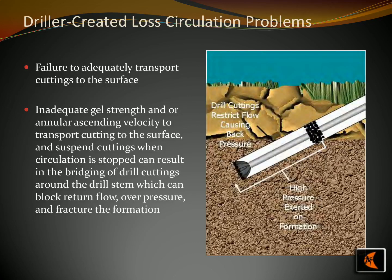The drilling industry confronts the significant challenge of driller-created loss circulation problems. Poor transport of cuttings to the surface may lead to weak gel strength, excessive annular ascending velocity, and the lodging of drill cuttings around the drill stem, resulting in blocked return flow, overpressure, and even fracture of the formation. Bentonite can be deployed to address these difficulties, offering a proficient seal against the formation. When bentonite is of sufficiently good quality, it will secure the walls of the drill hole and provide the optimal condition for drilling. Additionally, bentonite can be used to amplify the mixing of the drilling fluid, facilitating safe and efficient drilling.